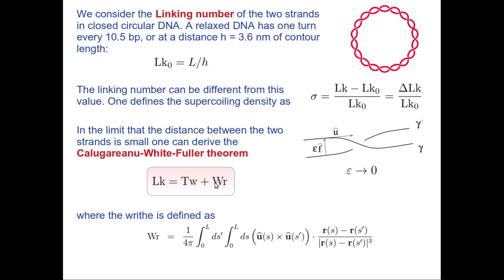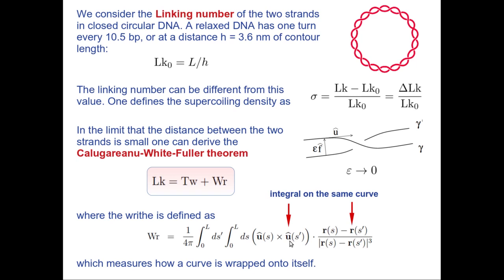The writhe WR is defined as a double integral. It looks very much like the definition of the linking number given in the previous slides, but there is a difference: this is a measure of how a curve is wrapped into itself. The difference compared to the linking number expression is that we are not talking about two curves, but the same curve.